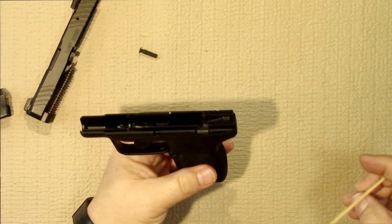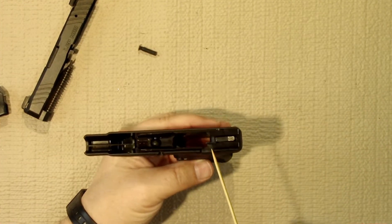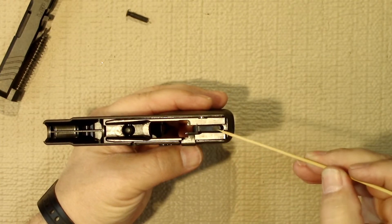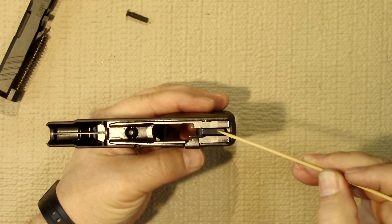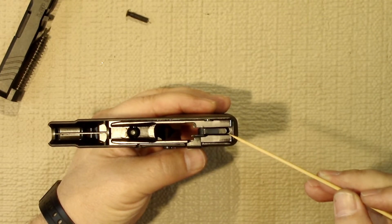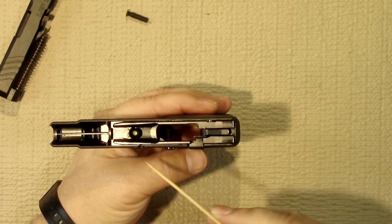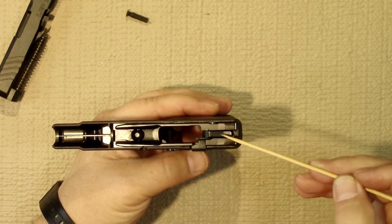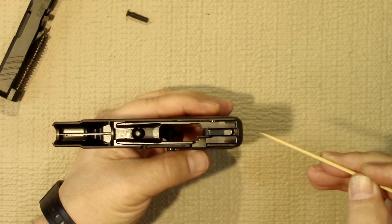We'll take a look at the frame first. The LCP Max is a hammer fired pistol. This is the hammer right here. When you pull the trigger, it releases the hammer that would come up and strike the firing pin to fire the weapon. You wouldn't want to pull the trigger with the slide removed because if there's nothing to hit, it will overextend and could damage the mechanism.